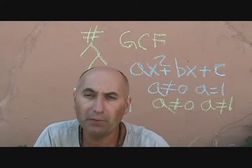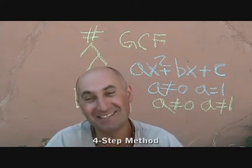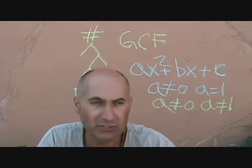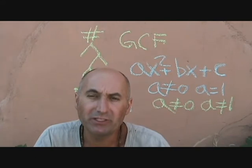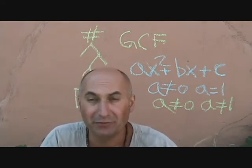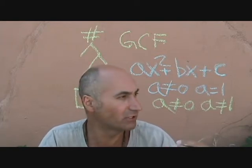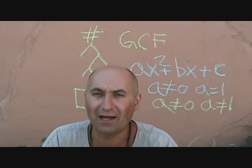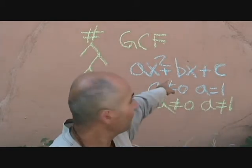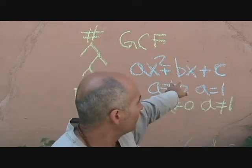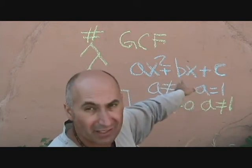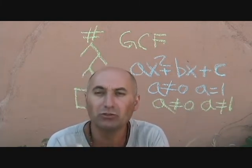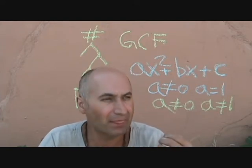The method I use to factor complex trinomials is referred to as the four-step method. Most teachers I've encountered, from students coming from different schools, end up teaching what's called decomposition. Decomposition — I don't like it. It's not really an algorithm. The way it works is you split up the bx term into two terms, then group the first split term with ax² and the other with c. That's sort of a guessing part — a calculated guessing part — and it's not a strict algorithm.